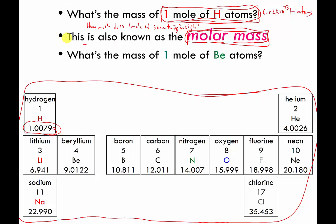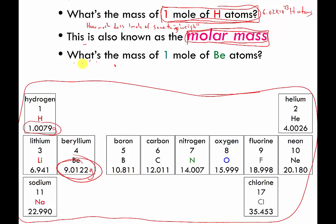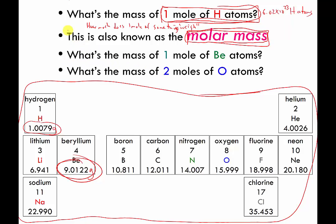What's the mass of one mole of beryllium atoms? Here's beryllium in the periodic table — the mass of one mole of beryllium is about nine grams. Another way of asking this is: what's the molar mass of Be, or beryllium? You'd give the same answer: nine grams. Sometimes people say nine grams per mole, but molar mass implies one mole — how much does one mole weigh.